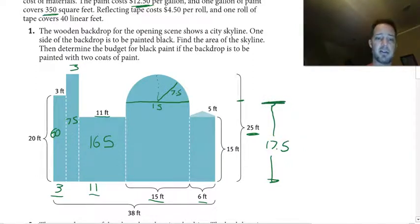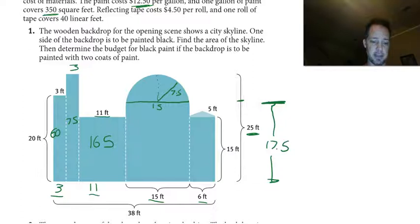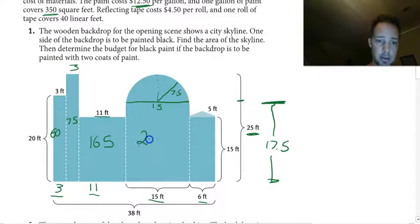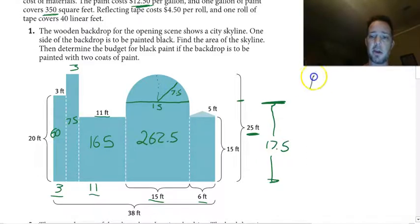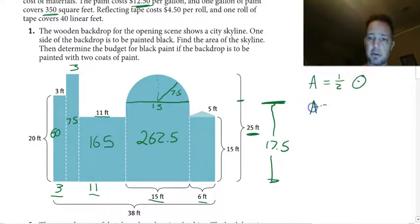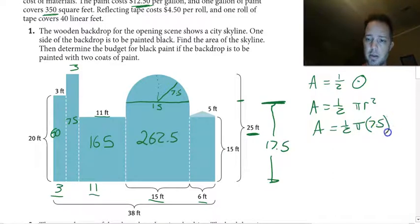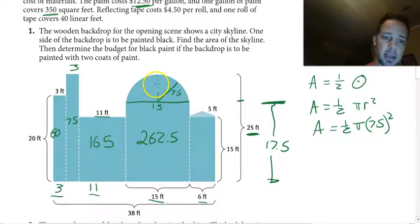The rectangle area is 15 times 17.5, which gives 262.5 square feet. For the semicircle, we find one half of the area of a circle with radius 7.5. Plugging into the calculator gives approximately 88.36 square feet.